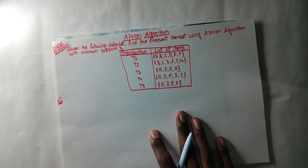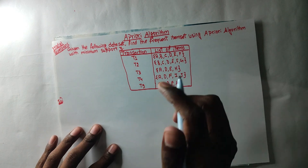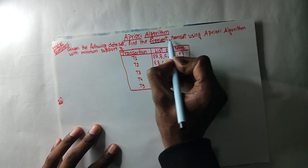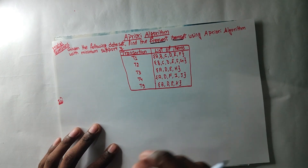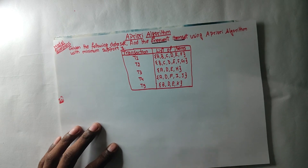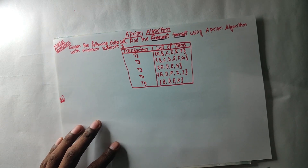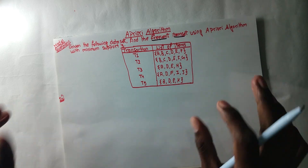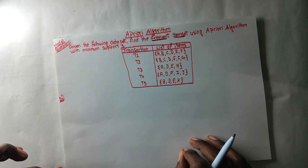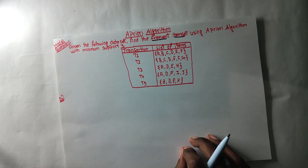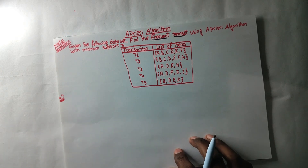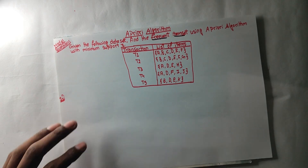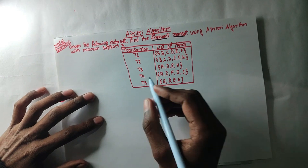As you may see, there is a question about the frequent item set. You will find the following information. There is a direct question.